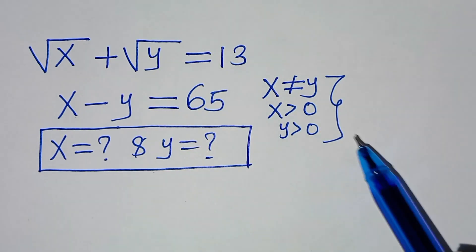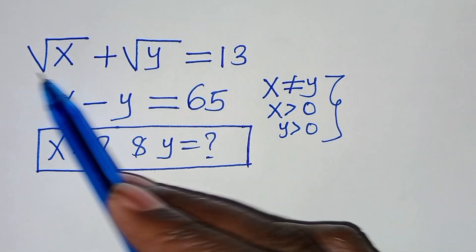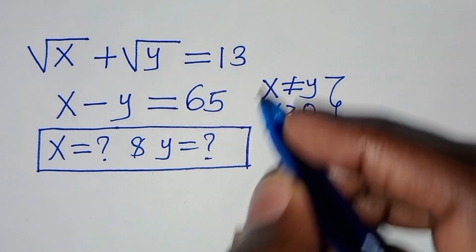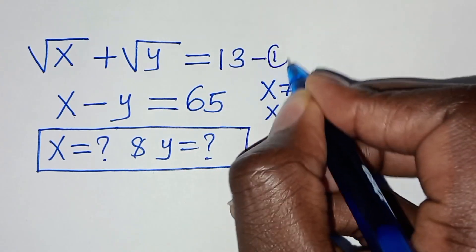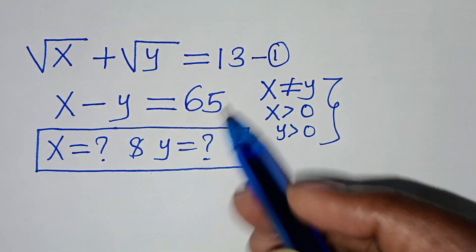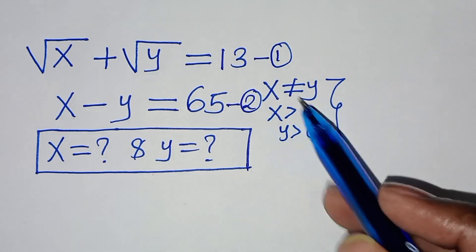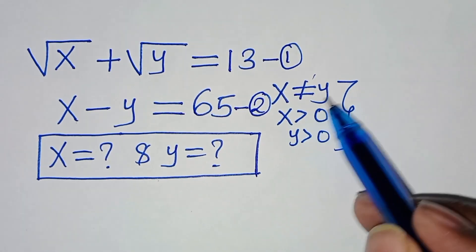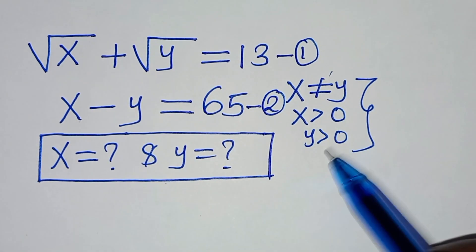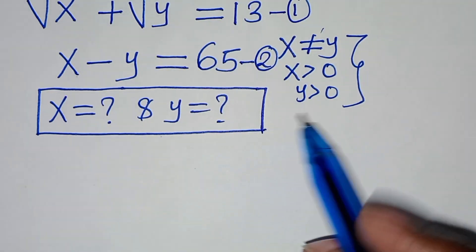Hello everyone, you are welcome to solve this nice algebra problem. We have square root of x plus square root of y equals 13 — let's call this equation 1 — and x minus y equals 65 — let's call this equation 2. Given that x is not equal to y, x is greater than 0, and y is greater than 0, what is the value of x and what is the value of y?